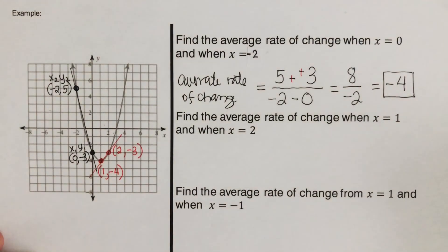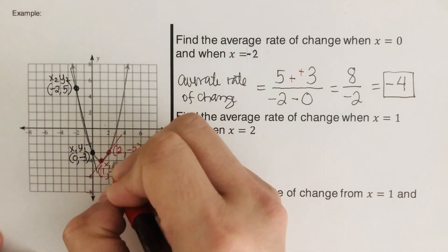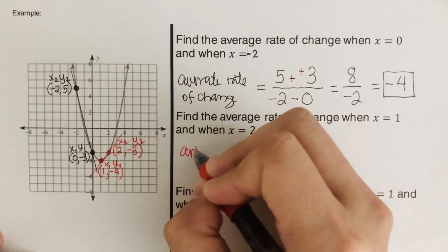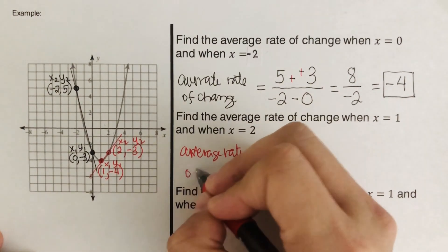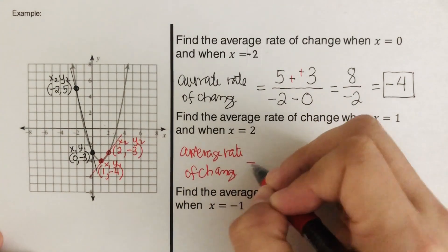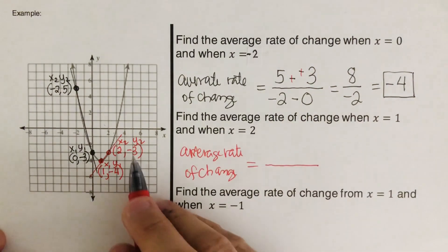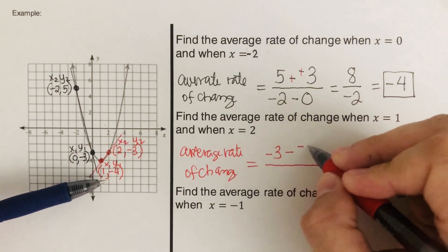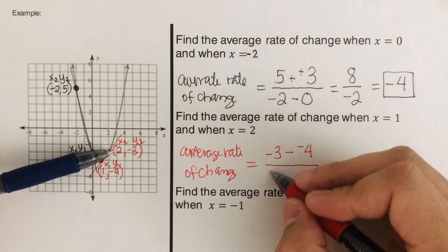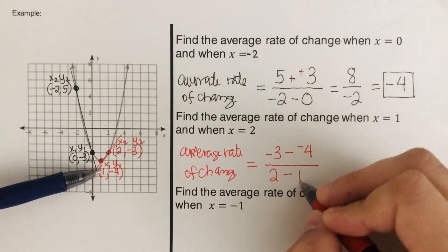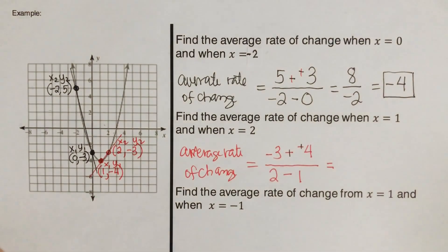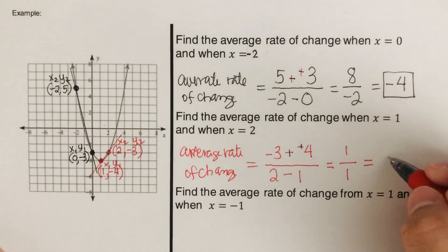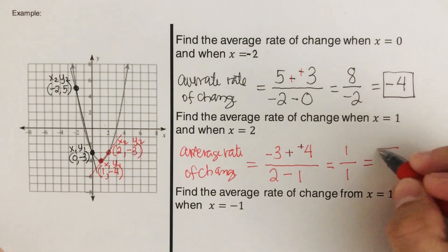We label these as x sub 1, y sub 1, x sub 2, y sub 2. The average rate of change equals y sub 2 which is negative 3, minus y sub 1 which is negative 4, over x sub 2 which is 2, minus x sub 1 which is 1. Changing the double negative to plus, that comes out to positive 1 over 1, so the average rate of change is positive 1.